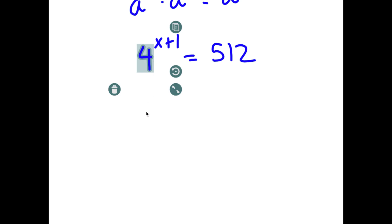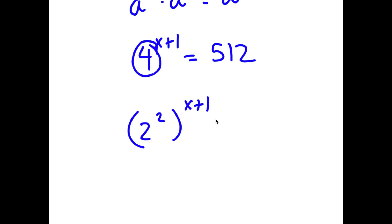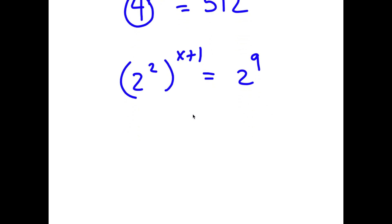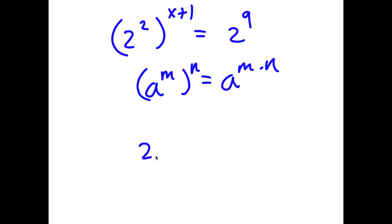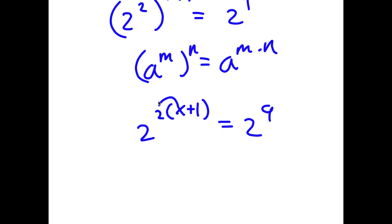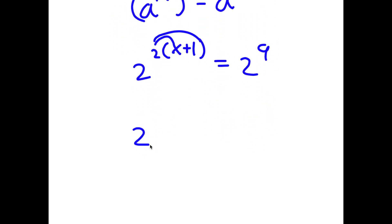Now 4 is the same thing as 2 squared. So I have 2 squared to the power of x plus 1 is equal to 512, which is the same thing as 2 to the power of 9. And if I have something in the form a to the power of m to the power of n, this is equal to a to the power of m times n. So 2 to the power of 2 to the power of x plus 1 equals 2 to the power of 2 times x plus 1. And 2 times x plus 1 — I can simply distribute the 2.